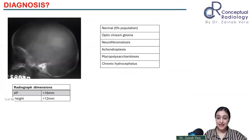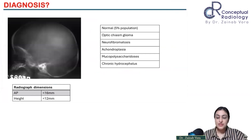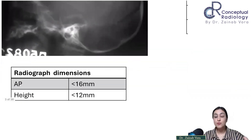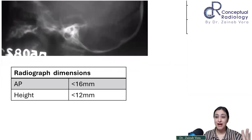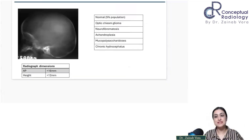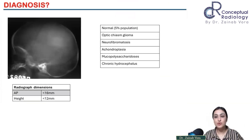Even though we don't really use X-rays for sella imaging anymore, you need to know the normal dimensions. If there is a macroadenoma or sellar enlargement we need to know the cutoff. Just keep a ballpark figure in mind: the normal height of the sella is 12 mm and the AP diameter is 16 mm. So 12 and 16 are the two numbers to remember.